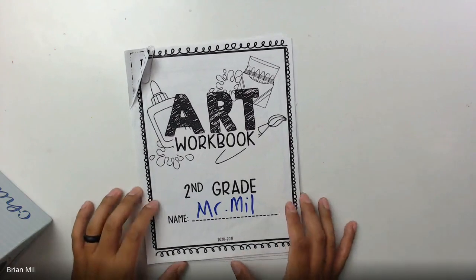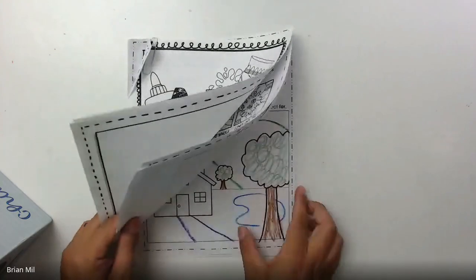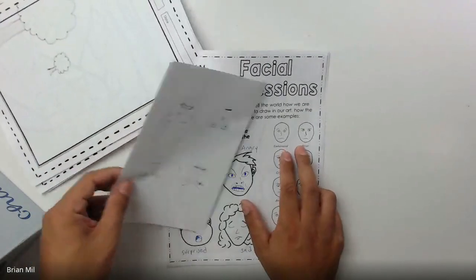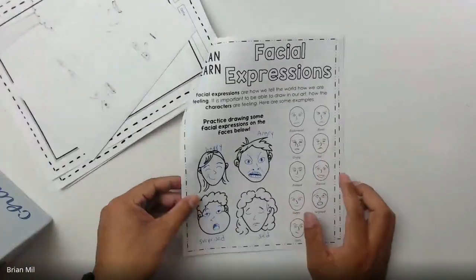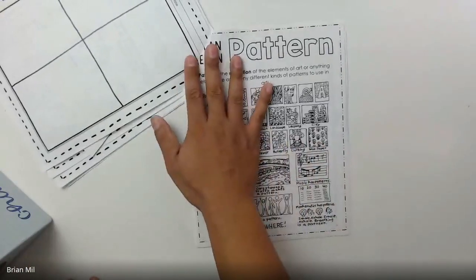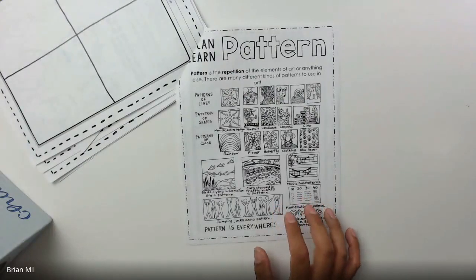All right, so we have the second work here, and we're going to flip to the page that says Pattern, so it's right after the facial expressions page that we did last time. Flip to this page, okay? Evvie, do you have a question still? What's your question?